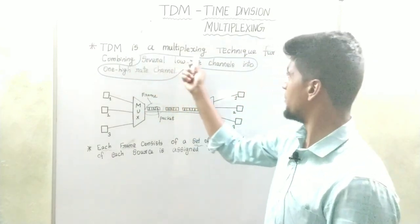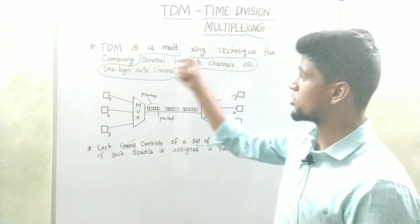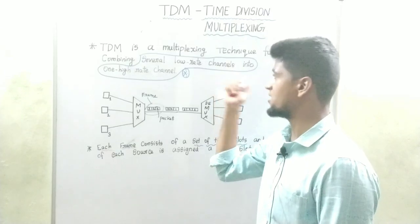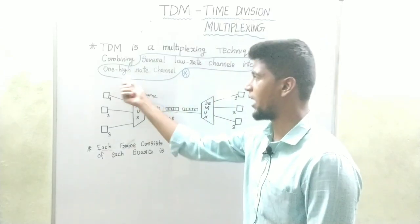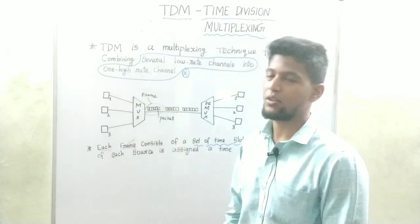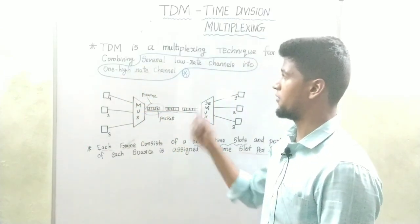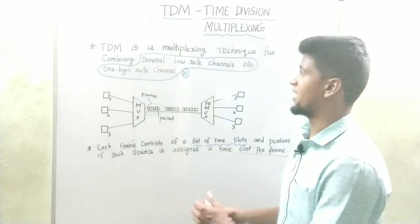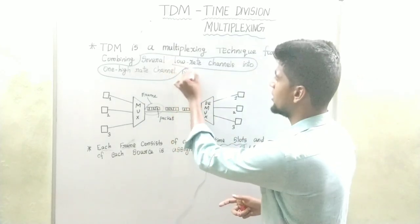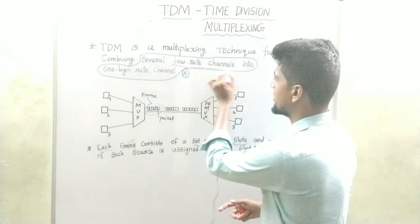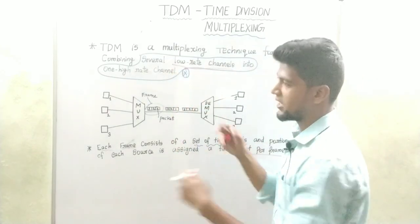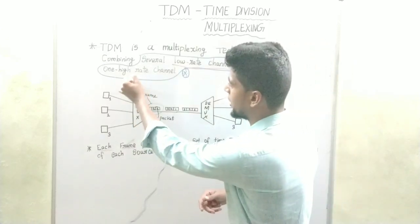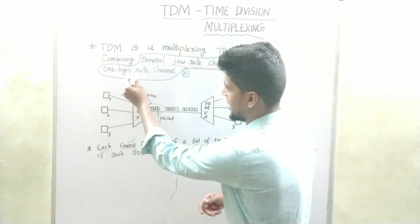TDM is a multiplexing technique used to combine several low-rate channels into one higher-rate channel. Here we will talk about low-rate channels combined into a high-rate channel.